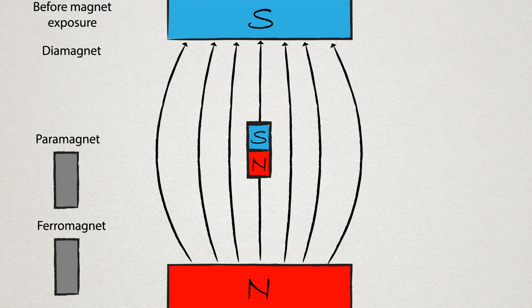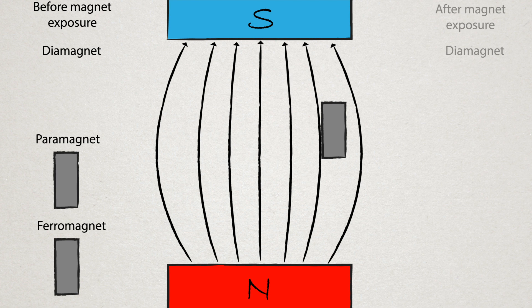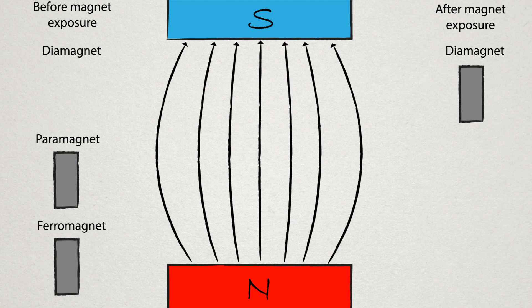When the diamagnetic material is removed from the magnet, these electron orbitals go back to randomly orientating, so there's no net magnetic field remaining.